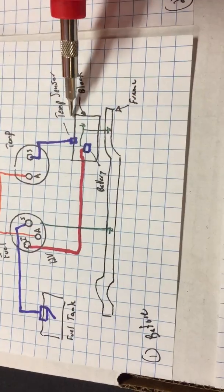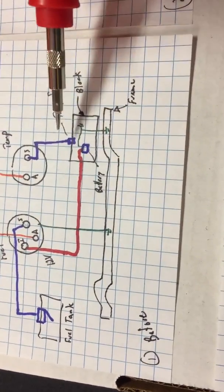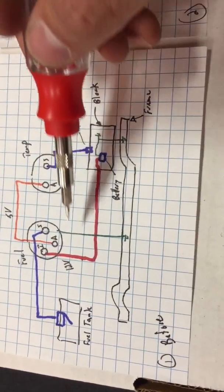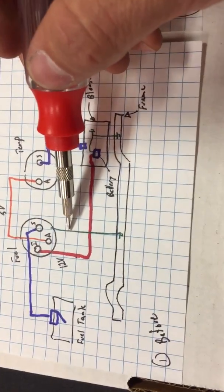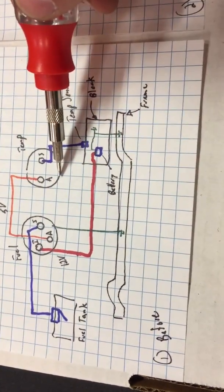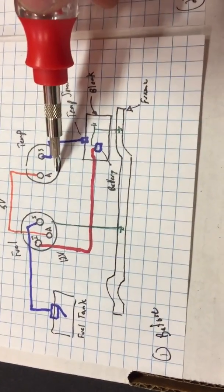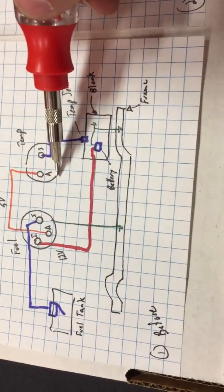Same thing with the temp sensor. If you lose that ground because it's grounded to the block, you're not going to burn up the gauge. So this ground is very, very crucial. I haven't determined that you necessarily need a ground here, but I have been making sure that during testing I always have one.